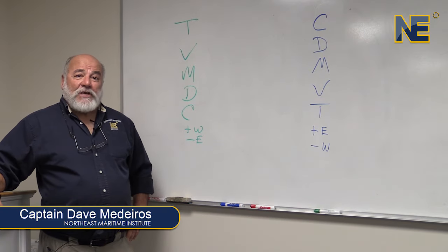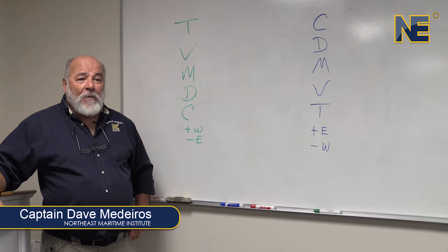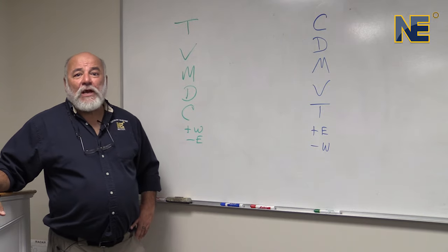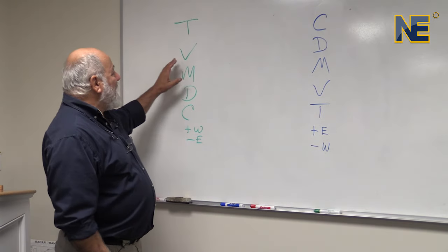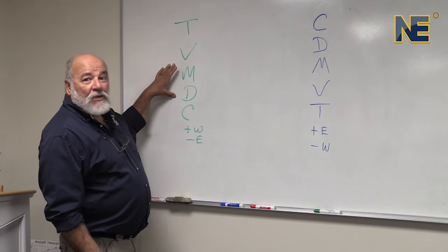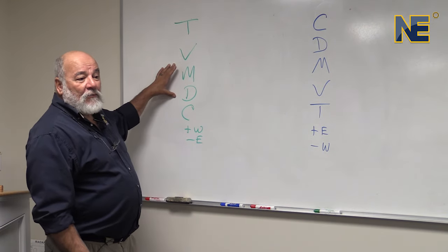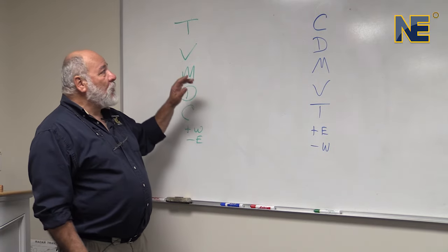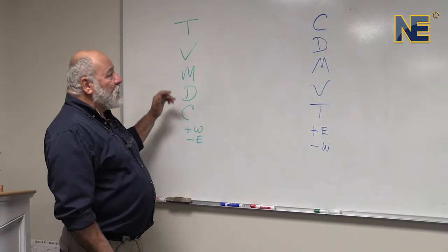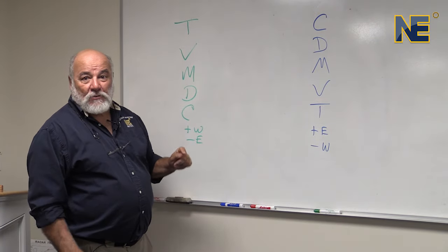We're going to talk about compass error. What is compass error? Compass error is combining the deviation and the variation and coming up with a quicker, shorter way to go from true to compass or compass to true.